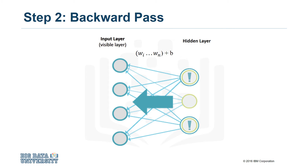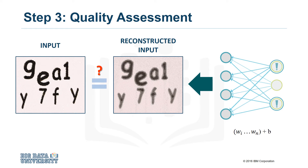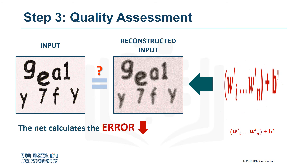During this step, the data passed backwards is also combined with individual weights and an overall bias. Once the information gets to the visible layer, the input is reconstructed and the RBM performs the third step. Step three consists of assessing the quality of the reconstruction by comparing it to the original data. The RBM then calculates the error and adjusts the weights and bias in order to minimize it. These three steps are repeated until the error is sufficiently low.